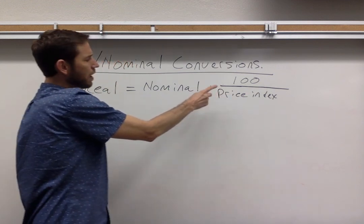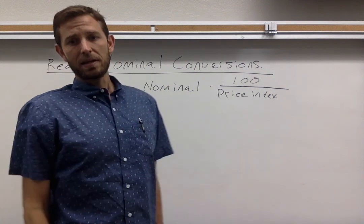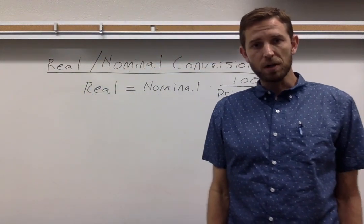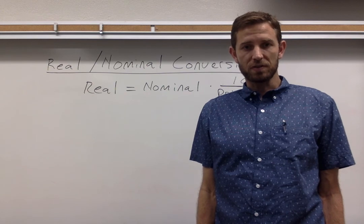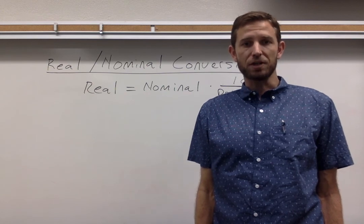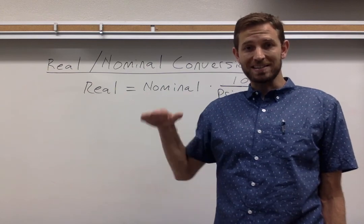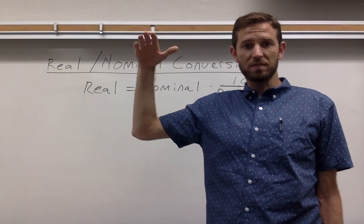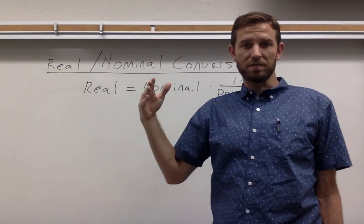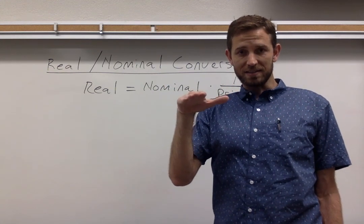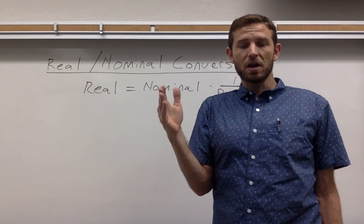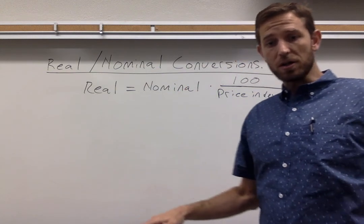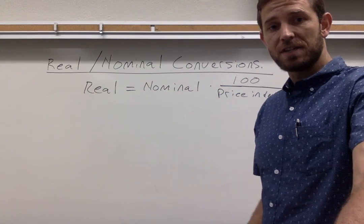A price index is a representation of just how much it costs for goods and services on average in the economy. So when that price index is going up, it means stuff is getting more expensive — that's evidence of inflation. If the price index is staying the same, it means prices are staying stable on average. And if the price index is getting smaller, then you're seeing deflation.